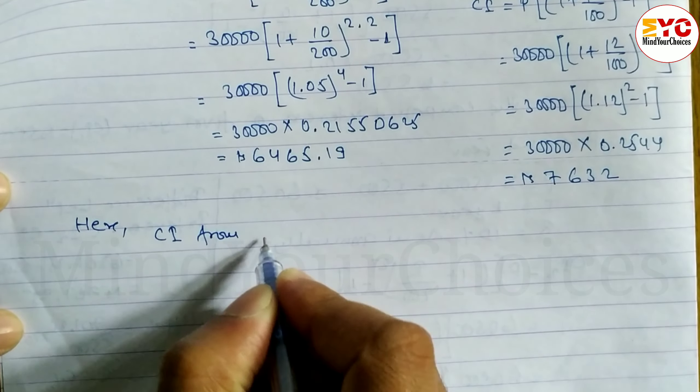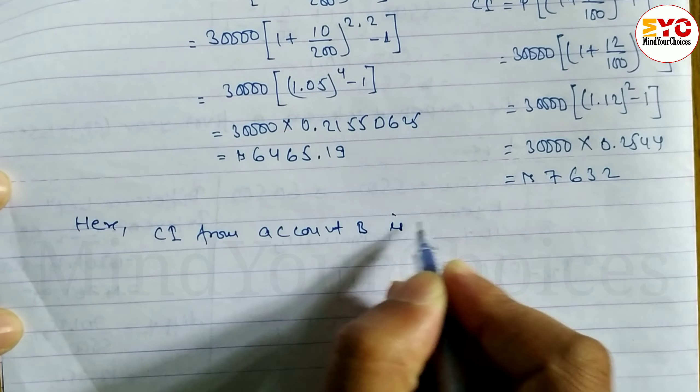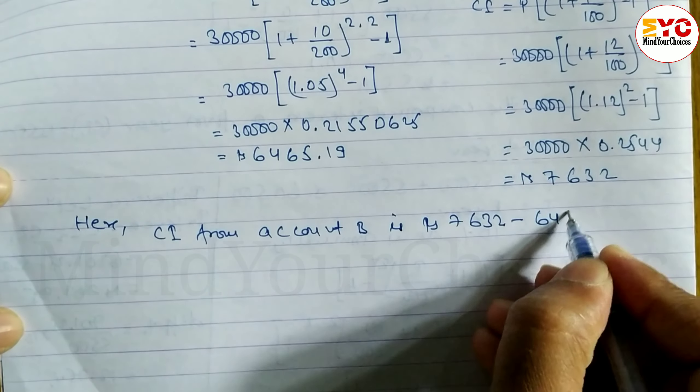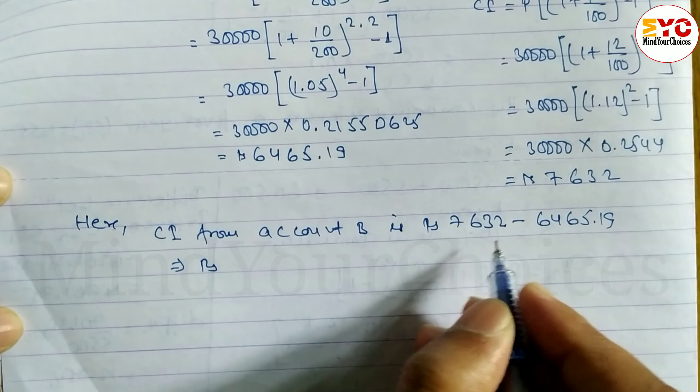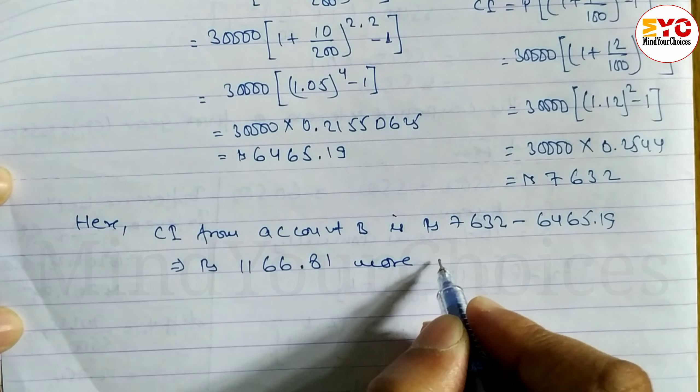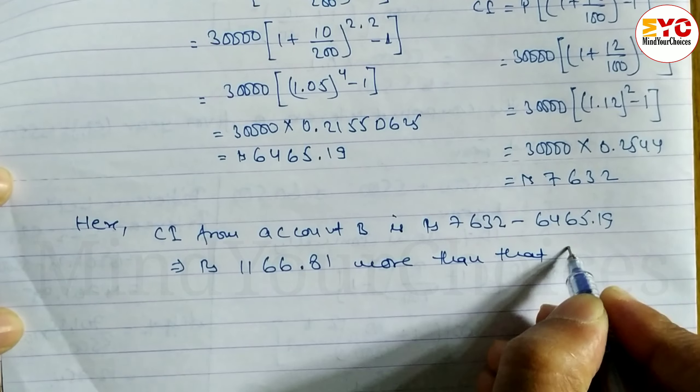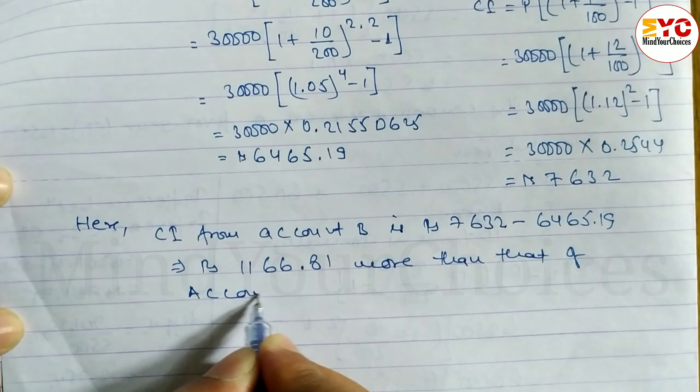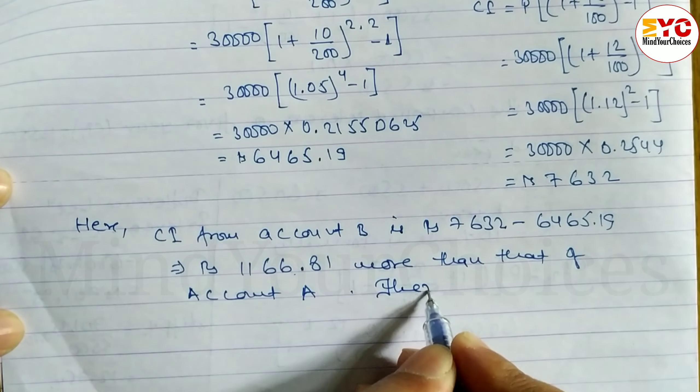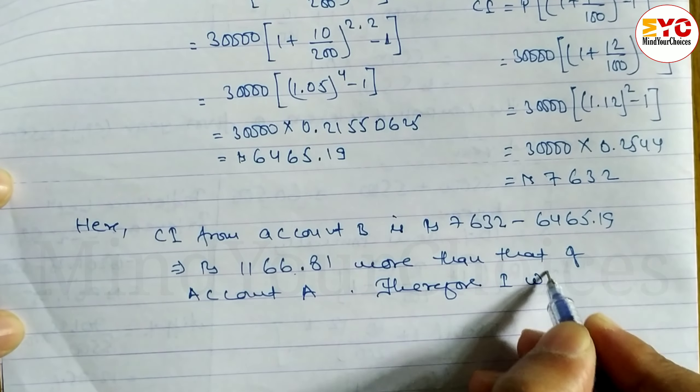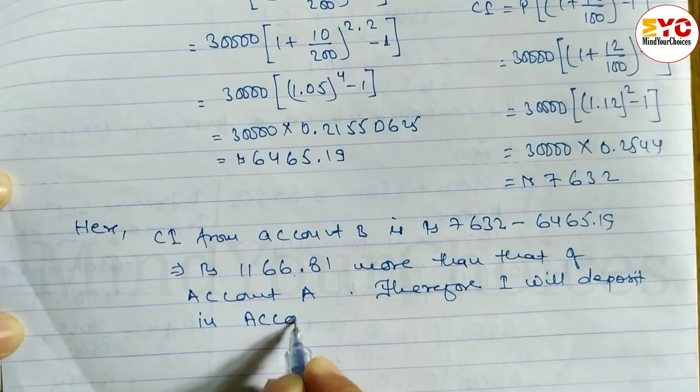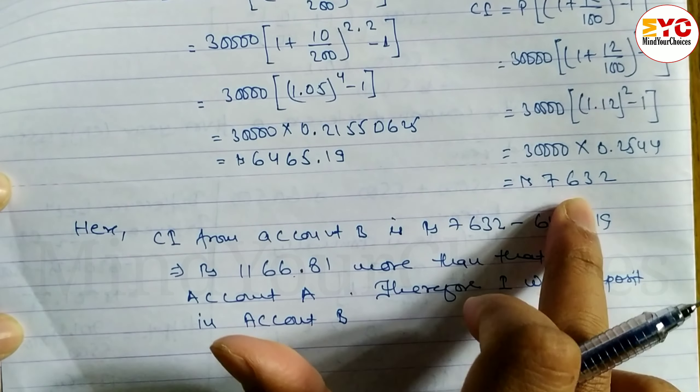CI from account B is rupees 7632 minus 6465.19 equals rupees 1166.81 more than that of account A. Account A compared to B, B has 1166.81 more. Therefore, I will deposit in account B because account B provides more interest than account A.